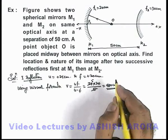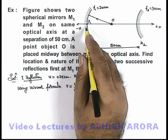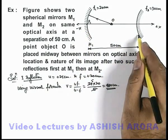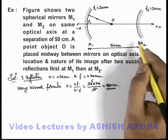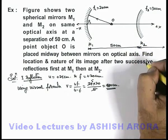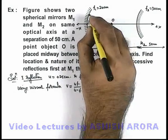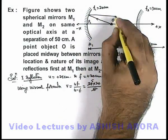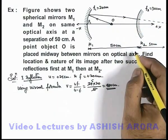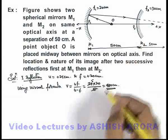That means the image will be produced at a distance hundred centimeters from pole 1, which is 50 centimeters behind the second mirror. Now in this situation, the light rays will be reflected in such a manner that these are going to produce an image at a distance 50 centimeters behind the pole 2 of the second mirror.